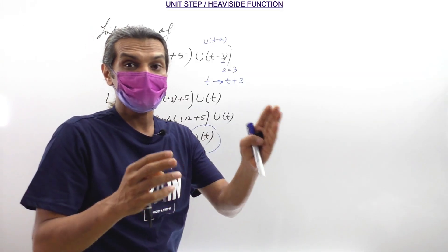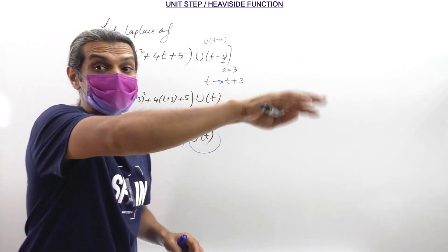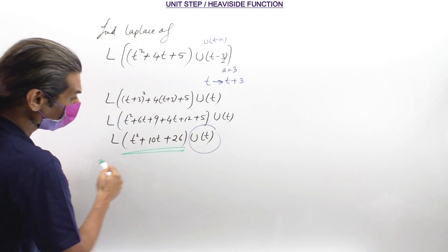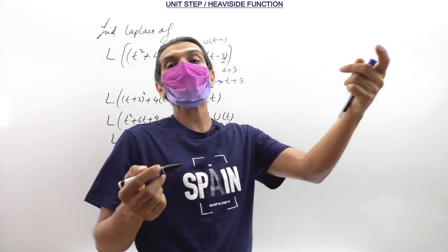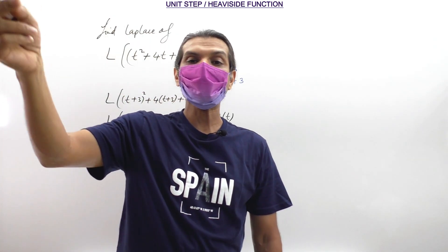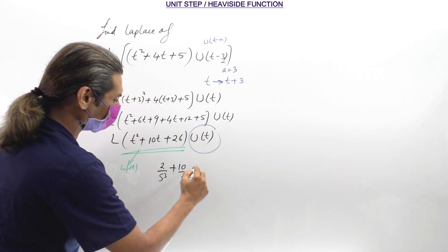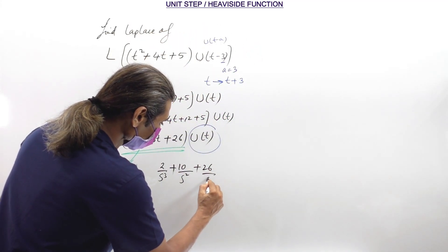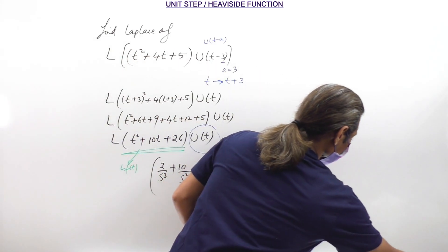Simply find the Laplace of F(t) = t² + 10t + 26, then multiply by e^(−As). Laplace of t² is 2/s³, Laplace of 10t is 10/s², and Laplace of 26 is 26/s. So the bracketed Laplace is (2/s³ + 10/s² + 26/s). Multiply the whole thing by e raised to minus 3s (since A = 3). That is the final answer.